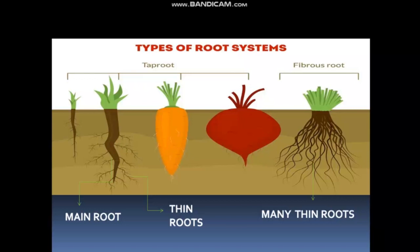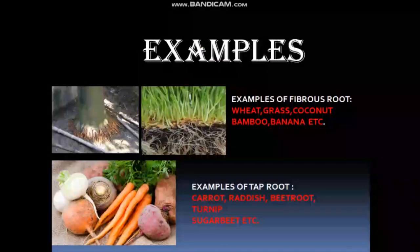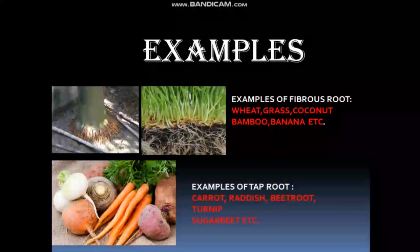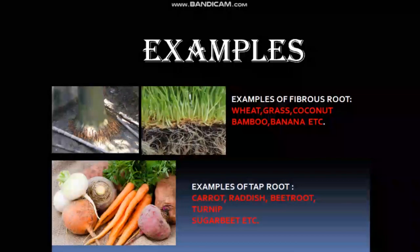Examples of fibrous roots are coconut tree, wheat, grass, and banana tree. Examples of tap roots are carrot, beetroot, turnip, and many more.